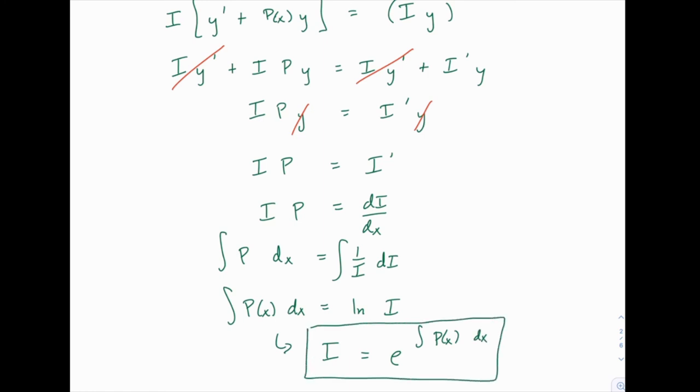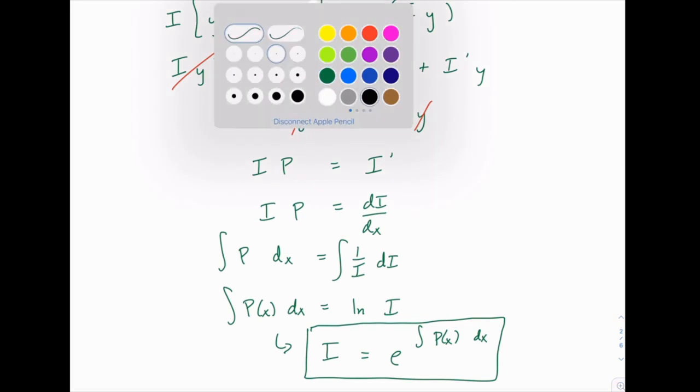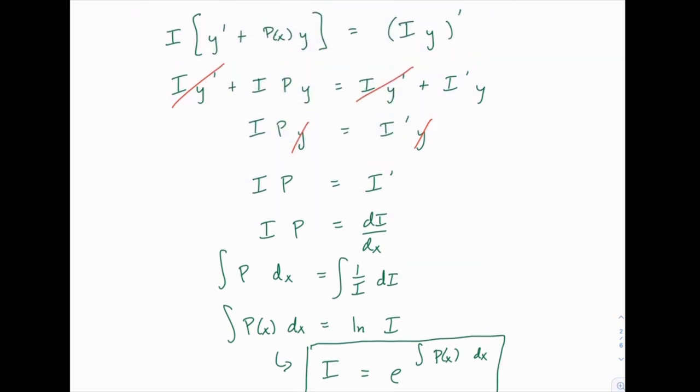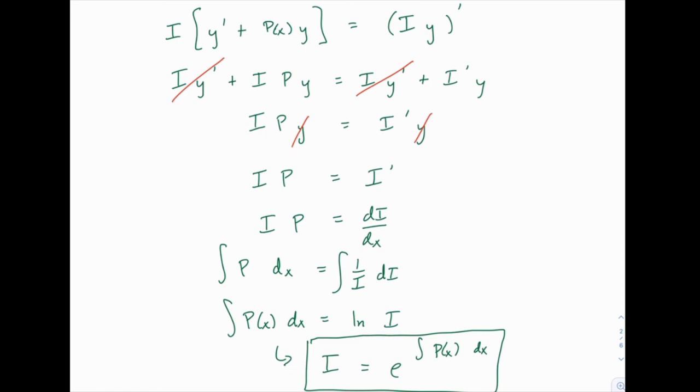So that's where the formula comes from. It comes from the fact that we set up what we want to happen. We want i to work according to the rule that's shown on the first line. And then we just follow through the logic. And it turns out that we run into a separable differential equation in terms of i. And when we solve that, we get i equals the integral of p of x and then e raised to that power. e to the power of the integral of p of x dx. So that's where it comes from.